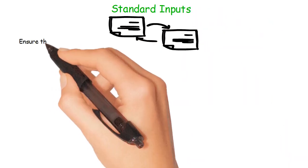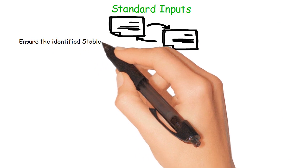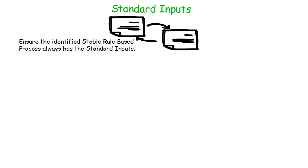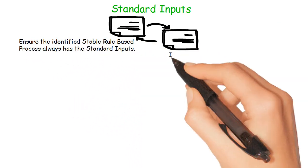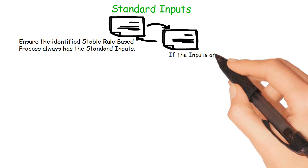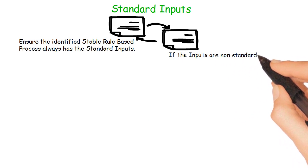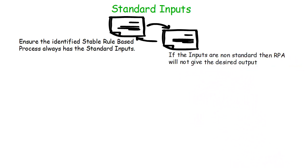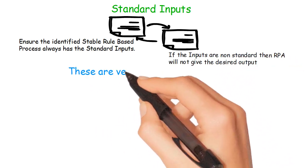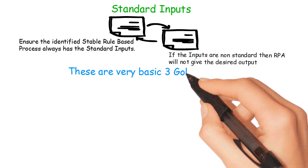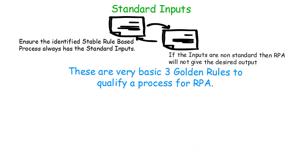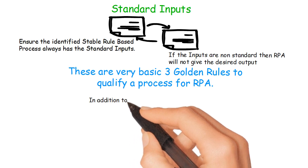Point number three: standard inputs. Inputs should always be standard. Ensure the identified stable rule-based process always has standard inputs. If the inputs are non-standard, then RPA will not give the desired output. These are the three basic golden rules to qualify a process for RPA.